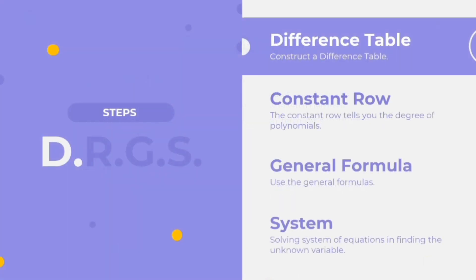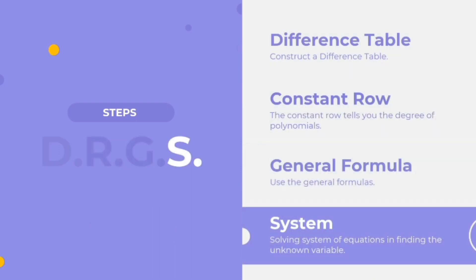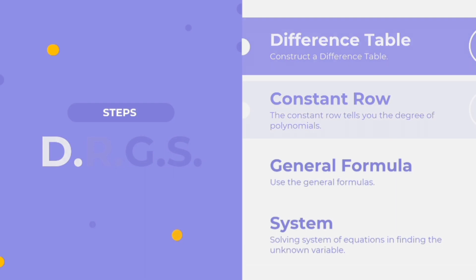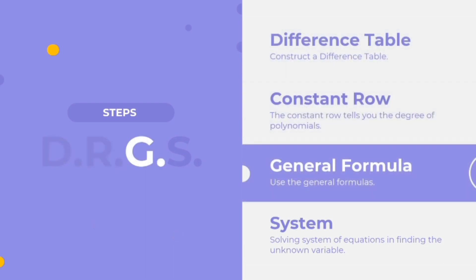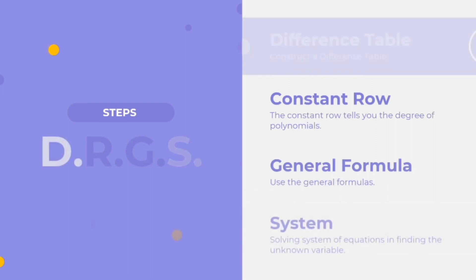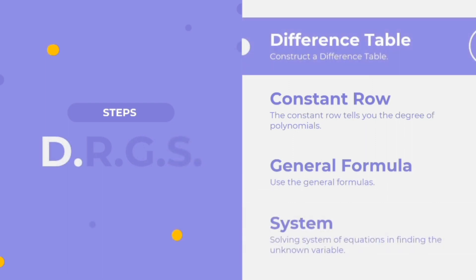In this section, we'll be discussing the steps in finding the n-term formula of a polynomial equation. We can summarize the steps using the acronym DRGS, which stands for Difference table, constant row, general formula, and system. So let's start with the first step, which is to construct a difference table.